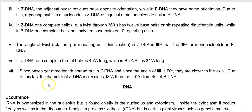Since bases are more spread out in Z-DNA and the angle of tilt is 60 degrees, they are closer to the axis. Due to this, the diameter of the Z-DNA molecule is 18 Angstroms compared to 20 Angstroms for B-DNA.